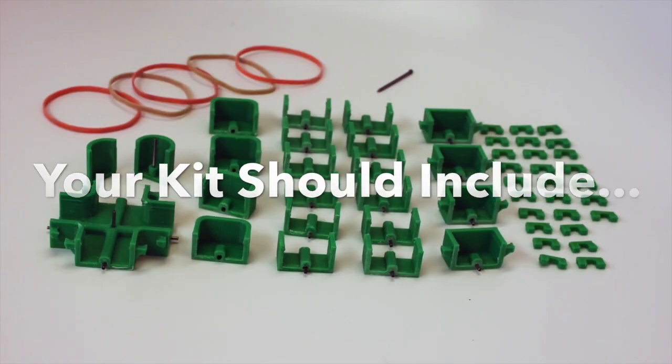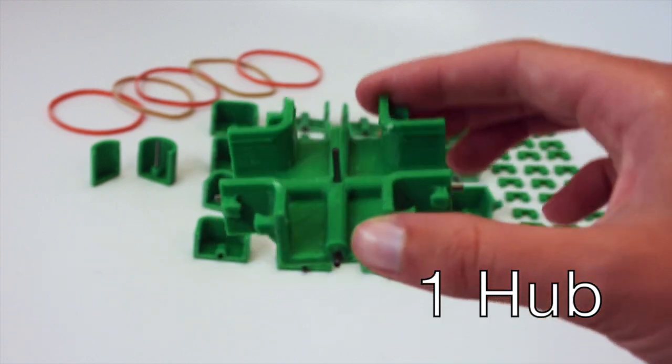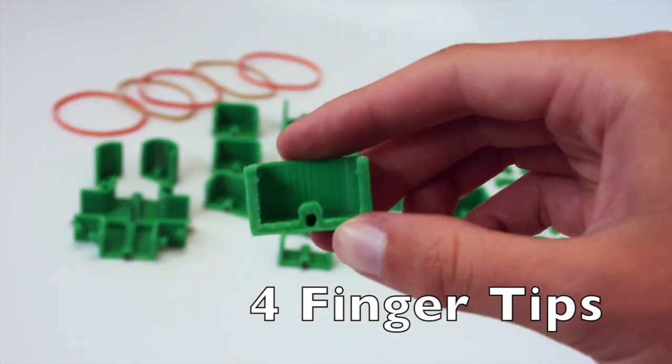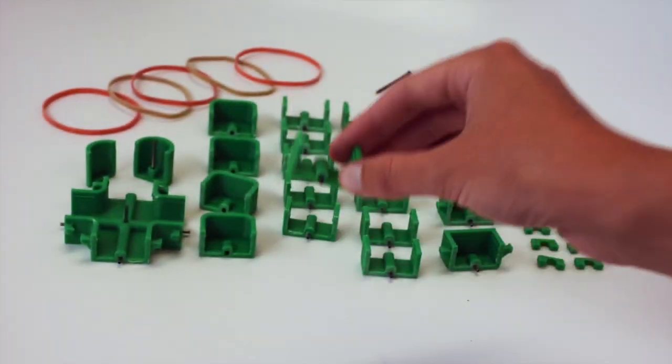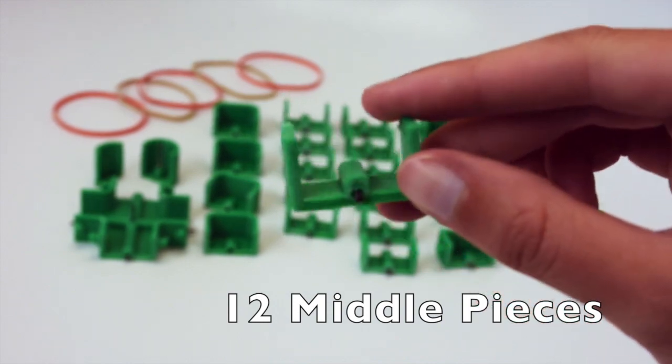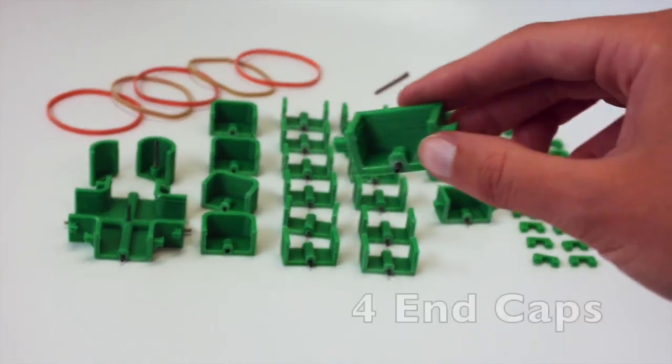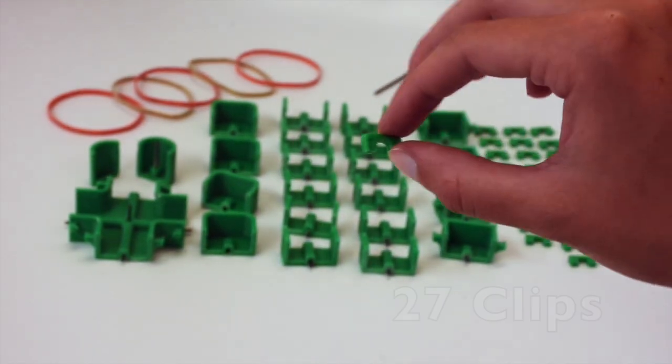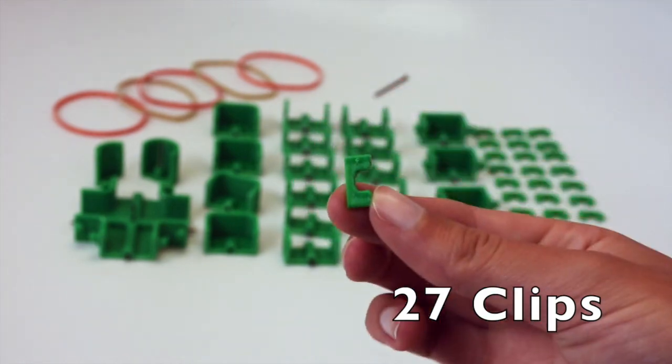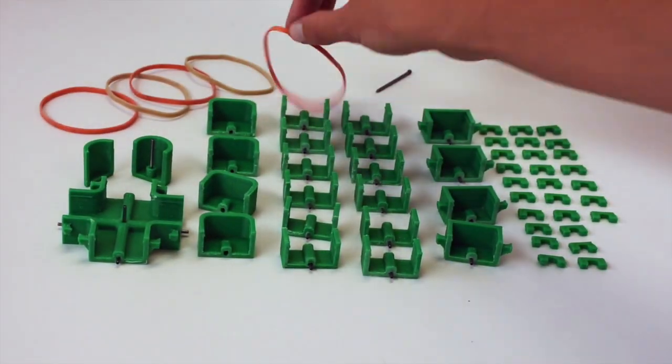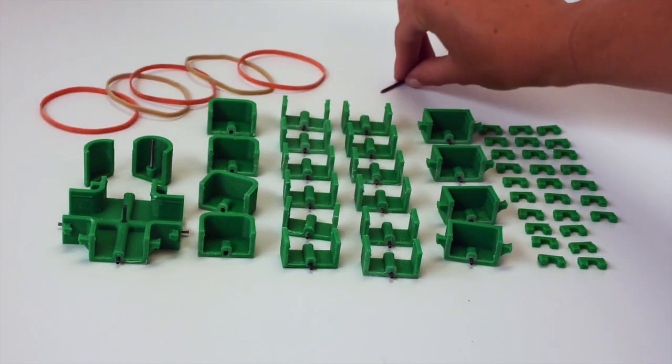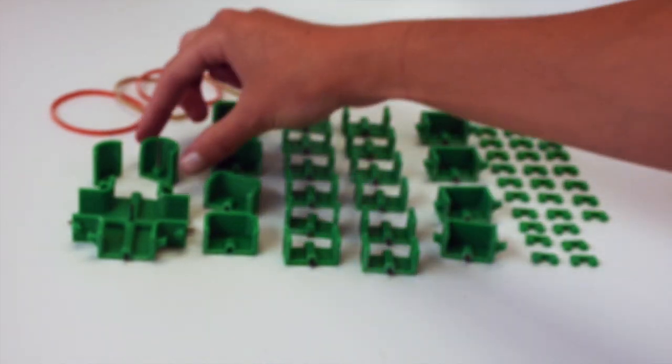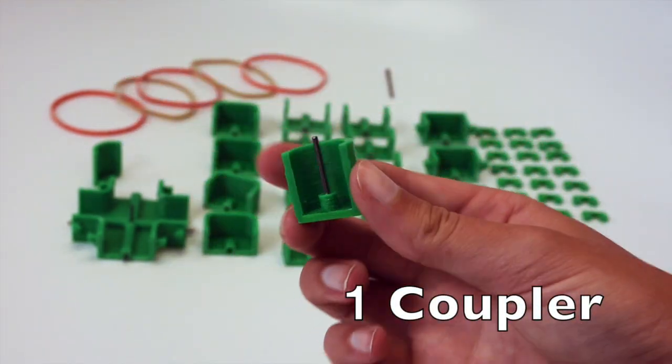Your kit should include 1 hub, 4 fingertips, 12 metal pieces, 4 end caps, 27 clips, 5 rubber bands, 1 nail, and 1 coupler mold.